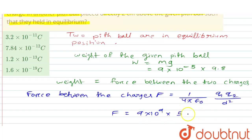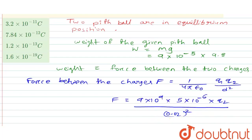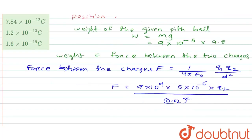q1 is given as 5 micro coulomb, so 5×10⁻⁶ C, and q2 is what we have to calculate. The distance d is 2 cm, so we write 0.02 m, and d² becomes (0.02)², converting centimetres into metres.